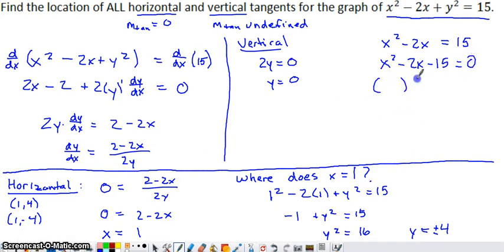I'm going to reverse FOIL this. First times first gives x², so x and x are logical choices. Last times last need to give -15. If I go (x - 5) and (x + 3), last times last gives -15. The outer multiplication gives +3x, inner gives -5x, which combine to -2x. We've factored it. I have a multiplication problem with a product of 0. Either x - 5 = 0 when x = 5, or x + 3 = 0 when x = -3.